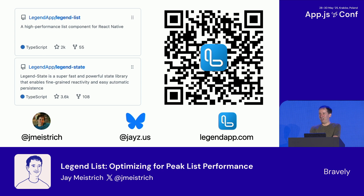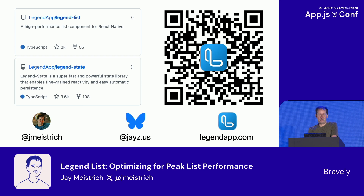I hope you'll give LegendList a try — it should make your app's lists faster. And if you have any general performance problems, Legend State may help also. Hopefully these strategies can help you optimize everything else in your apps. And if LegendList helps you, please consider sponsoring it so I can devote more time to this. If you see me around in the next couple days, let's chat about performance. Thank you.